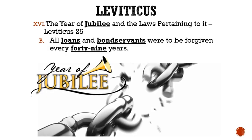Letter B: All loans and bond servants were to be forgiven every forty-nine years. Every seven occurrences of the seven years was to be considered the year of Jubilee, and all possessions and bond servants were to be freed. Interestingly, each year they got closer to the year of Jubilee, the value of items was to increase, but then immediately decrease afterward.